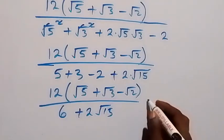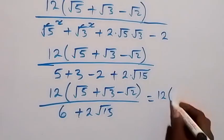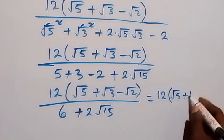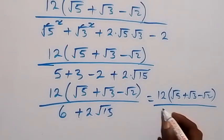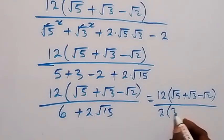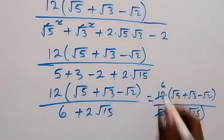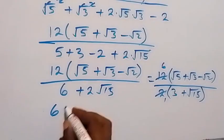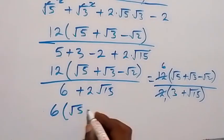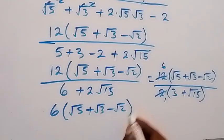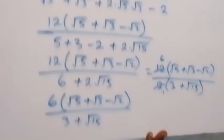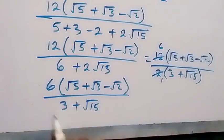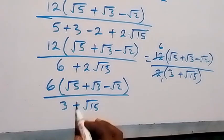From here we can say this is 12 into bracket root 5 plus root 3 minus root 2, over from here we can factor 2 out: we have 2 into bracket 3 plus root 15. These two go here: 12 divided by 2 gives us 6. So we can see now that we have 6 into bracket root 5 plus root 3 minus root 2, over 3 plus root 15.